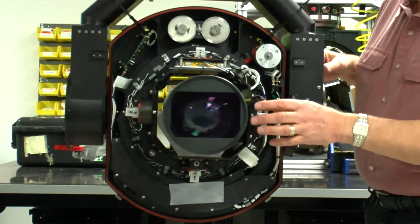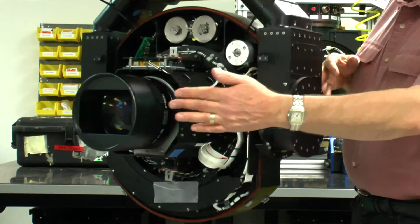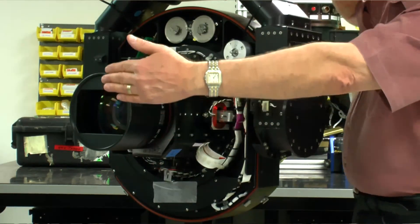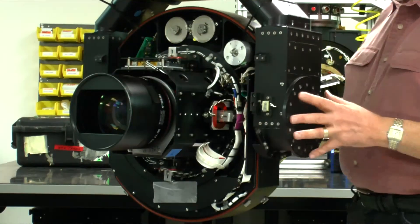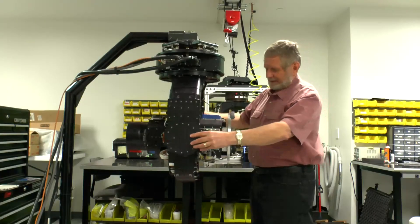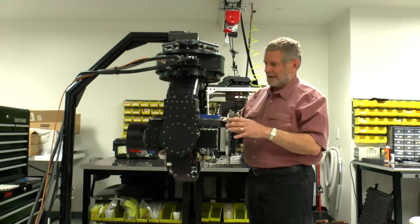It's an f2.8 zoom lens. It goes from 24 millimeters to 290 millimeters. So this is a big deal that we got this to fit into this smaller gimbal.